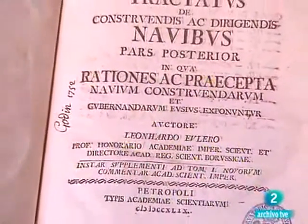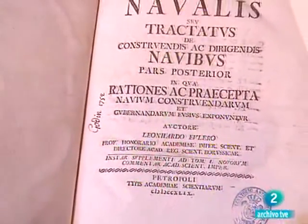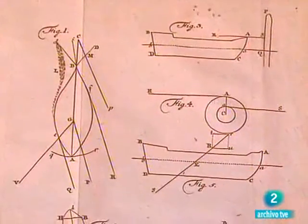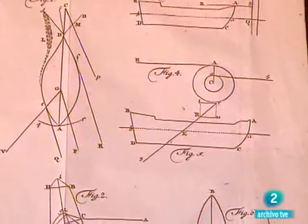el premio de la Academia Francesa de Ciencias, con un trabajo sobre la distribución óptima de los mástiles en los barcos para aumentar su velocidad. Es la primera, pero no será la última sorpresa, que nos dará este genio.